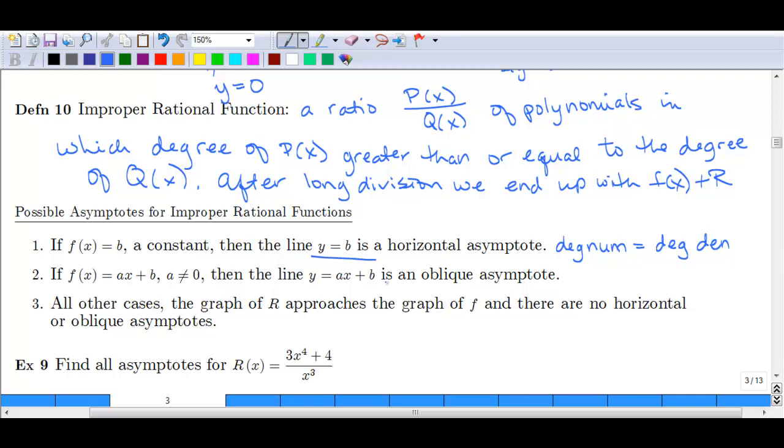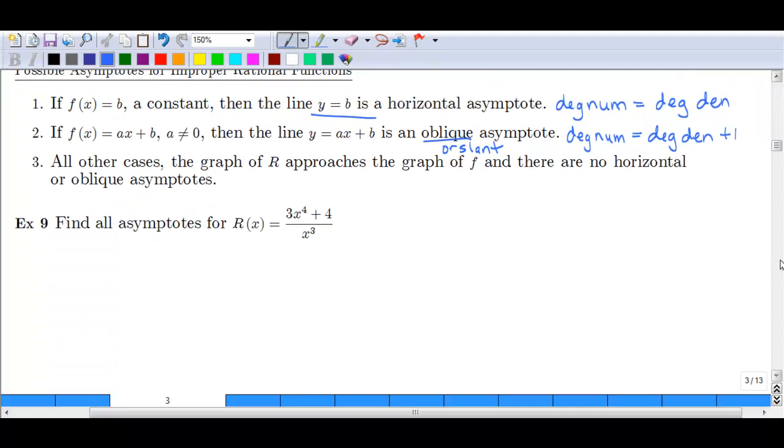Then the line y equals Ax plus b is what we call an oblique or a slant asymptote. And again, this is the case when the degree of the numerator is 1 greater than the degree of the denominator. And anything higher than that, 2, 3, 4 higher, we end up with no horizontal or oblique asymptote. So let's look at an example.